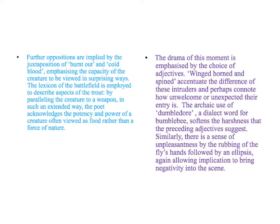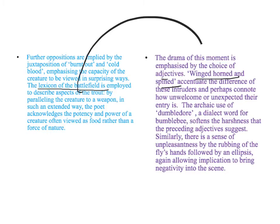Now, you've done a perfect pair of Peter paragraphs, but what you have to do is find another language connection. There are so many things you could connect. For example, you've got the semantic field of the battlefield with Heaney's poem suggesting the power of the Trout - the idea of the creature as a weapon. Whereas when Hardy talks about the natural world, there is a sense of threat with the adjectives winged, horned, and spined, but they appear weird and alien rather than a weapon. That might be the foundation for another pair of Peter paragraphs.